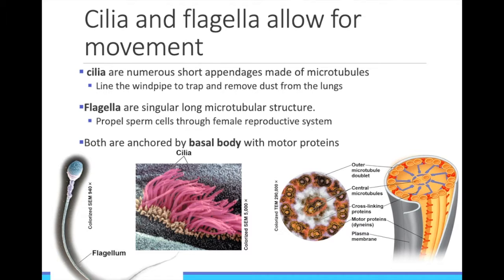Cilia and flagella are mobile appendages that extend from the cell membrane. Cilia are usually short and numerous — the cell surface will be covered in many of these cilia to almost resemble hair. Flagella are similar, except that they are long and there are usually only one or two on a cell.